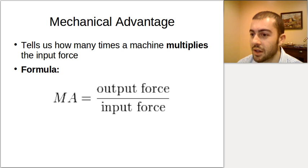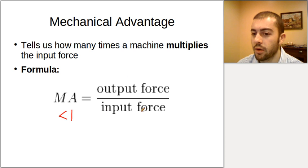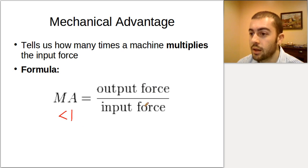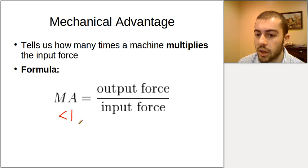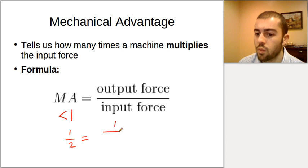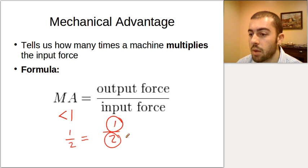If the mechanical advantage is less than 1, that means the output force is less than the input force. For example, if the mechanical advantage is 1/2, and the output force is 1, then the input force would be 2, because that gives us 1/2. Either way, the output force is less than the input force.